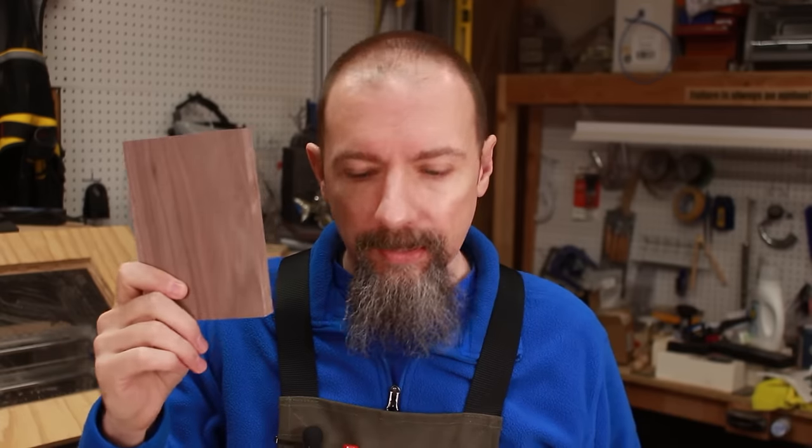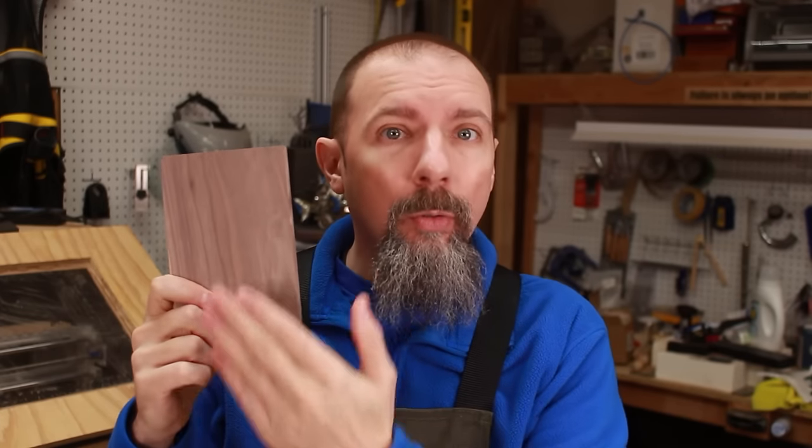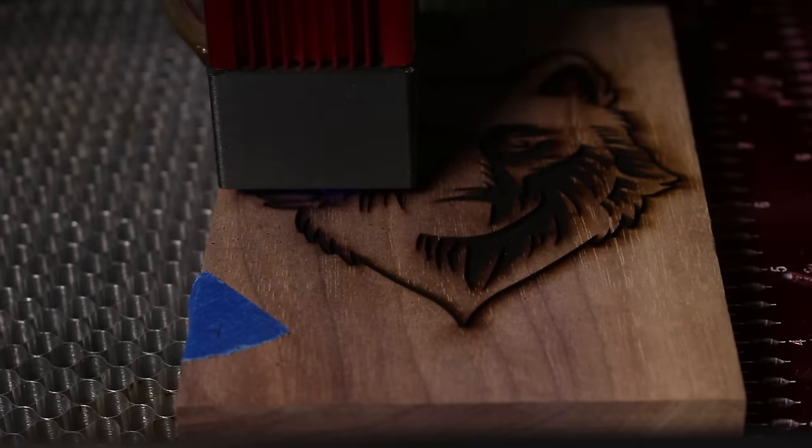For our engraving today, I'm going to be using walnut for the pocket and maple for the inlay. So the walnut is where we're going to engrave the hole or the pocket that we'll put the maple, which will be the inlay, into. While I've got the pocket engraving in my engraver, let's go take a look at Lightburn, and I'll show you how I set this up.